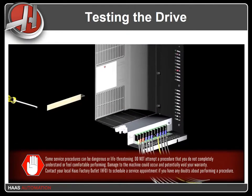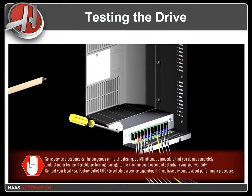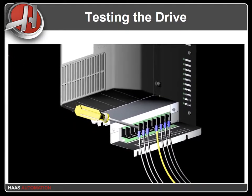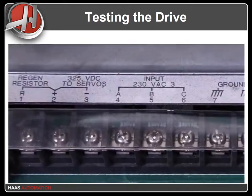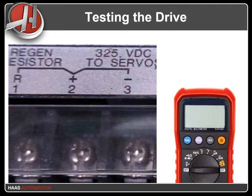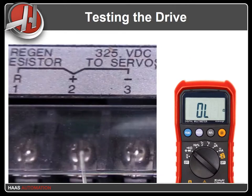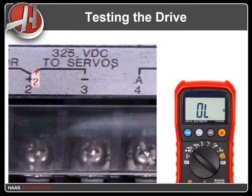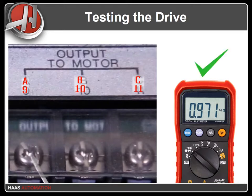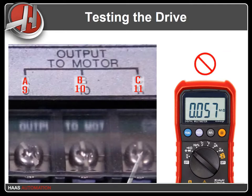Once you're certain that there is no voltage in the vector drive, label and remove the leads from the DC bus. In our tests, we want to make sure we are only measuring resistance through the vector drive itself. First, check the output on the positive side of the DC bus. Set your multimeter to resistance test mode and put the black lead on terminal 2, labeled with a plus sign. Use the red lead to measure the resistance to motor terminals 9, 10, and 11, labeled A, B, and C. The meter should show high resistance readings, typically in the range of kilo or mega ohms. If your meter reads very low resistance, the vector drive is damaged.